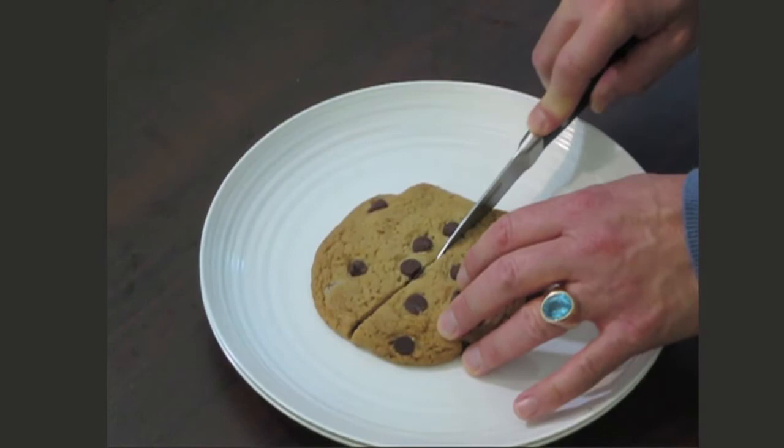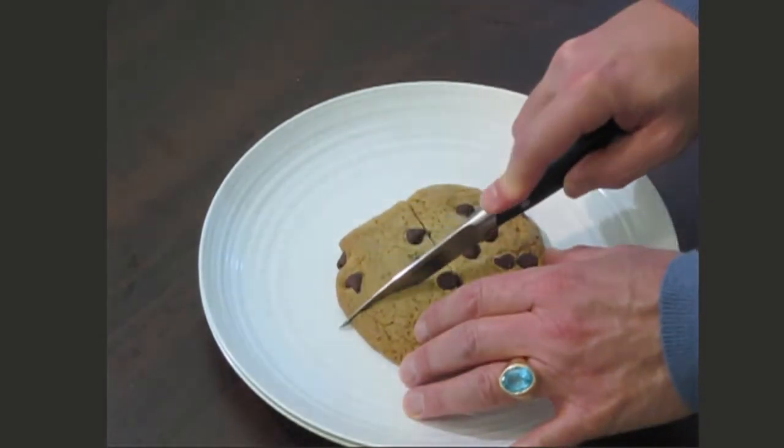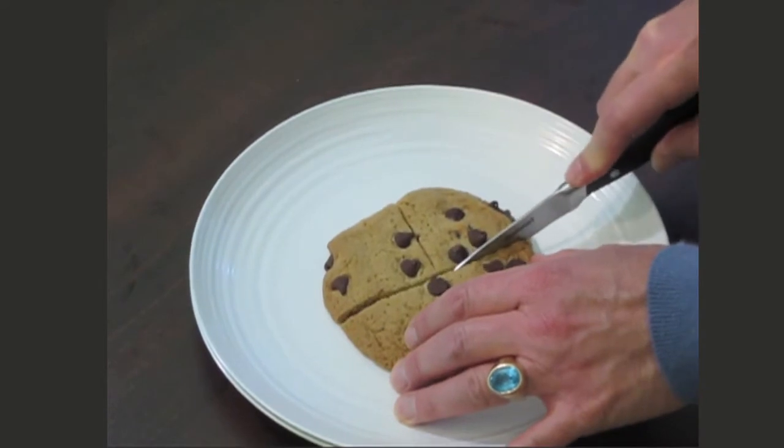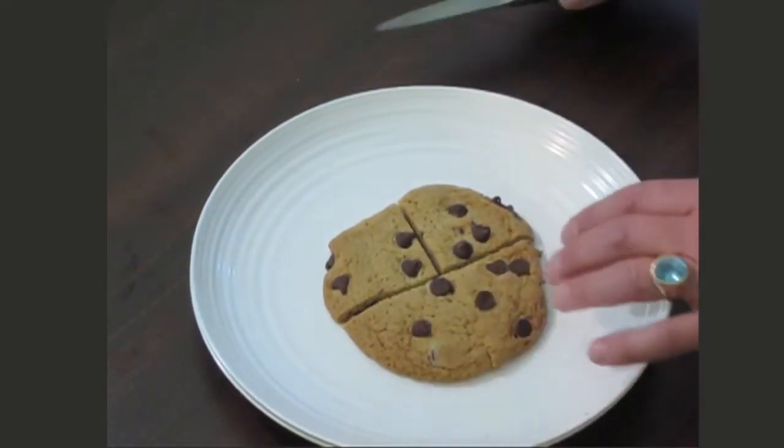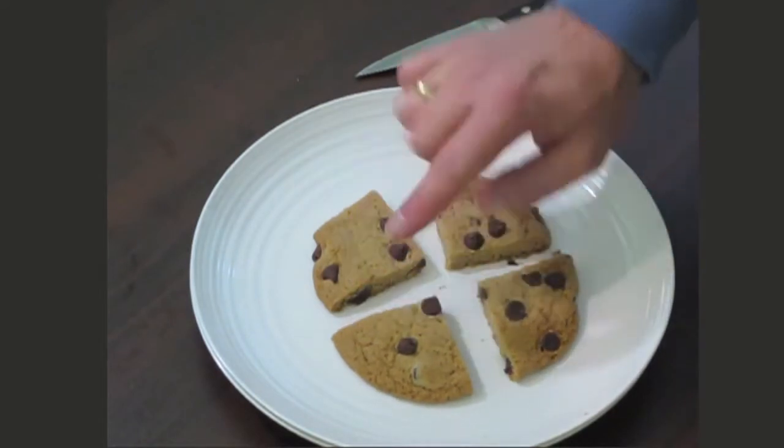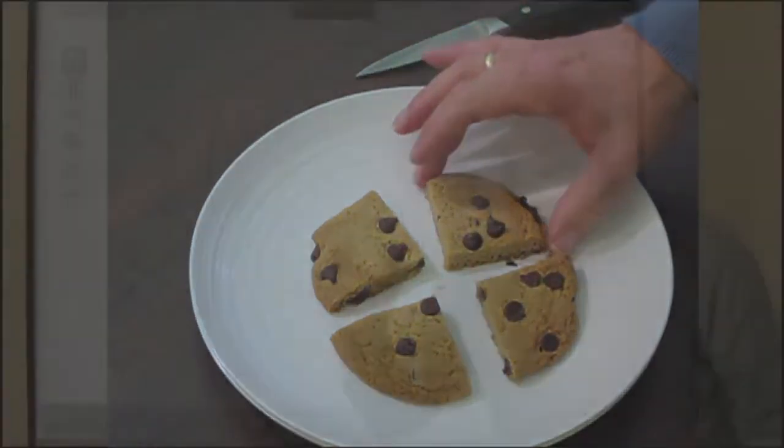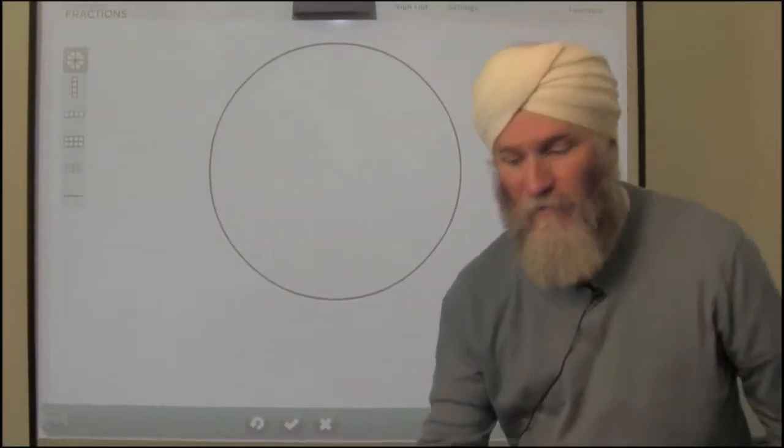So here I divided it in half and now I'm going to cut it again so that now I have four parts and they're pretty equal. I've done a pretty good job. So we can call these fourths. Here is one fourth, two fourths, three fourths, four fourths and if I were to eat one of those I'd be eating one fourth of the cookie.